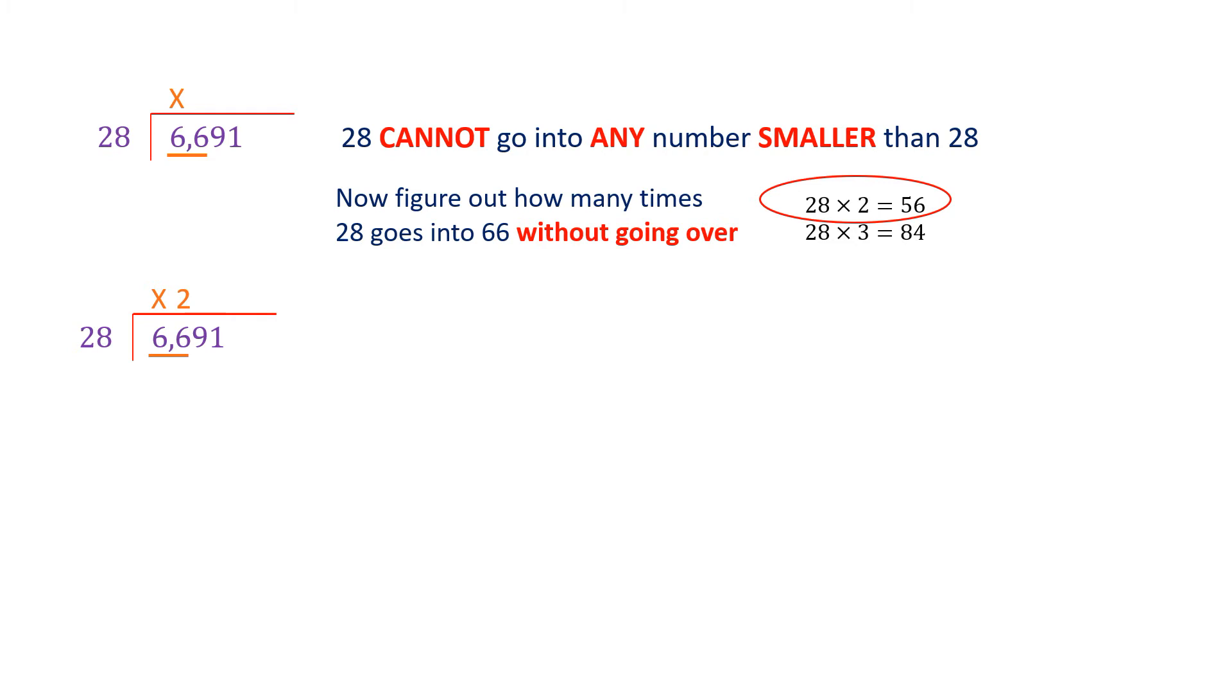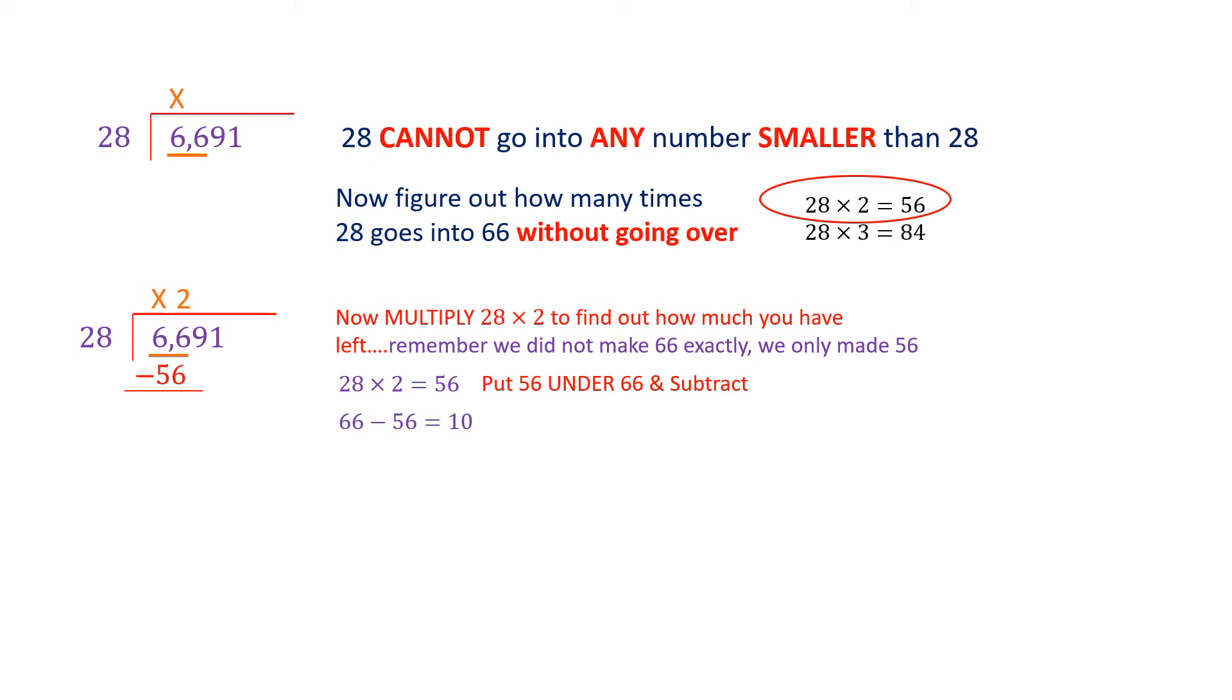Now what we're going to do is multiply 28 times 2 to find out how much we have left. We already know this. We just multiplied it. But remember, we didn't make 66 exactly. So we didn't actually satisfy going into 66 exactly. So we've got to figure out how much we have over, left over. So when we do that, we do 2 times 28. We get what we already know, 56. You put the 56 beneath the 66 to subtract and figure out what's left over. How much of this 66 did I not go into? And that's going to be 10. 66 minus 56 is 10. Put the 10 down there.